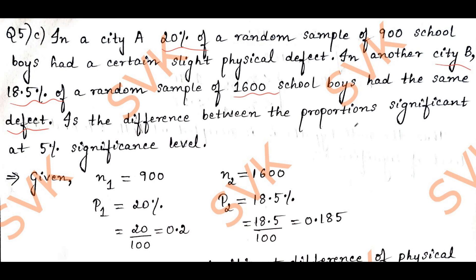Is the difference between the proportions significant at 5% level of significance? We need to solve this problem as they have given samples of two proportions. We need to determine if the difference of those sample proportions is significant at 5% level or not.